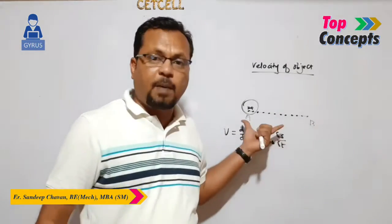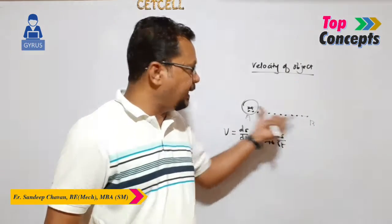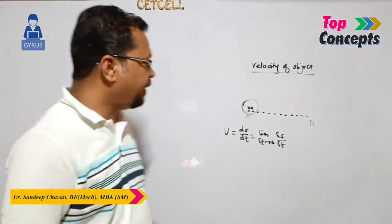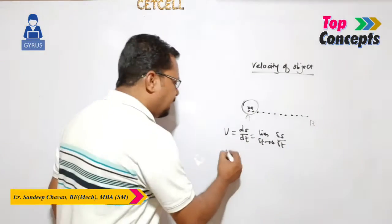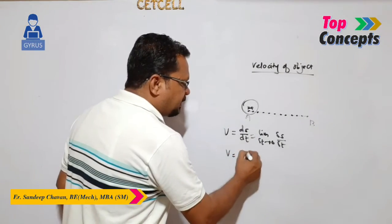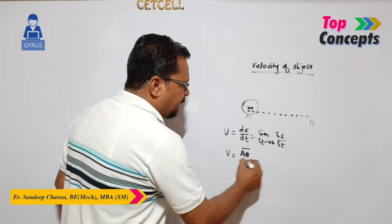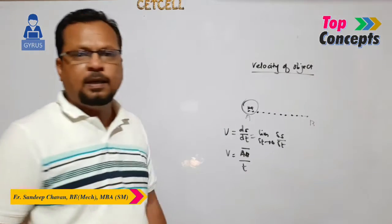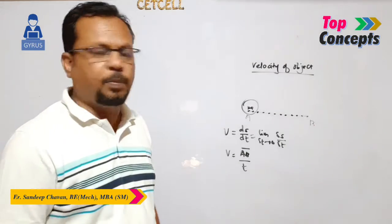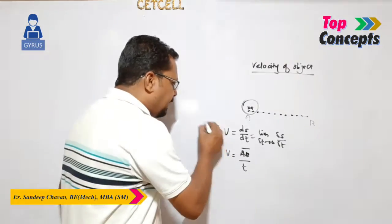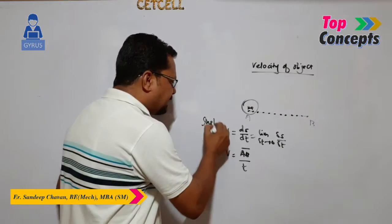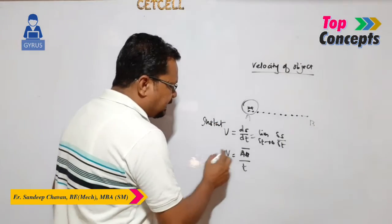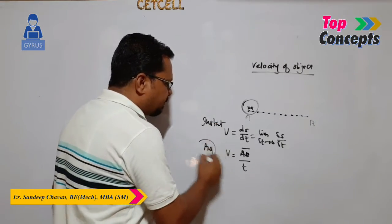Over the entire path — over the entire displacement AB — if we take the velocity, it is simply displacement AB divided by the time taken by the particle to complete the motion. That gives the average velocity.